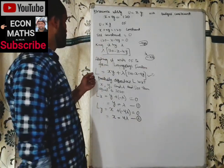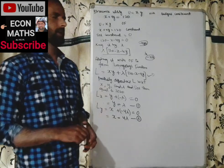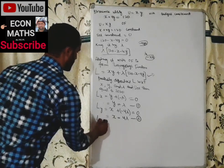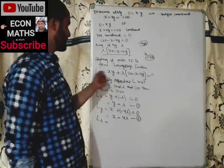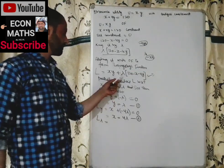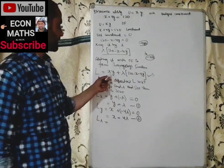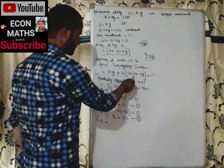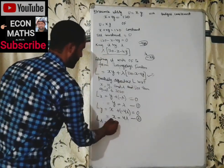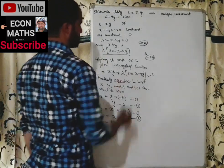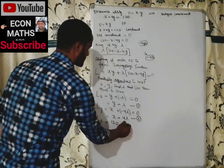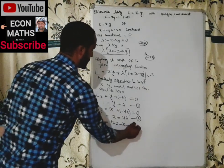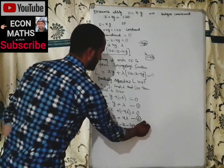Now we differentiate L with respect to lambda. L_λ: the derivative of x·y with respect to λ is 0; λ·120 gives 120; −λx gives −x; and −4λy gives −4y. So Equation 3 is: 120 − x − 4y = 0.